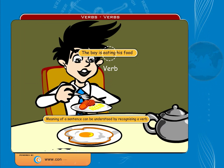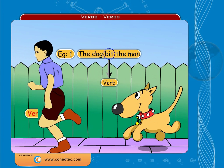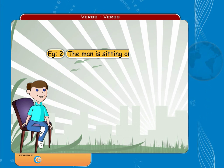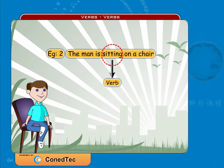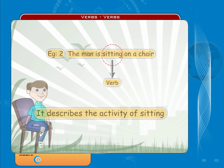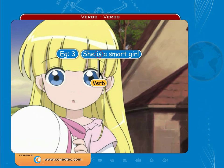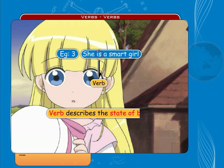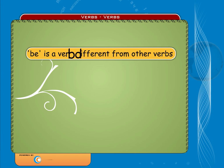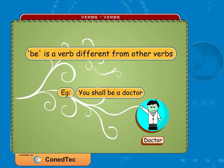In the sentence 'The dog bit the man,' 'bit' is the verb, which shows the action of the sentence. In the sentence 'The man is sitting on a chair,' 'sitting' is the verb. In the sentence 'She is a smart girl,' there is no action, but a state of being is expressed by the verb 'is.' The word 'be' is different from other verbs in many ways, but can still be thought of as a verb.